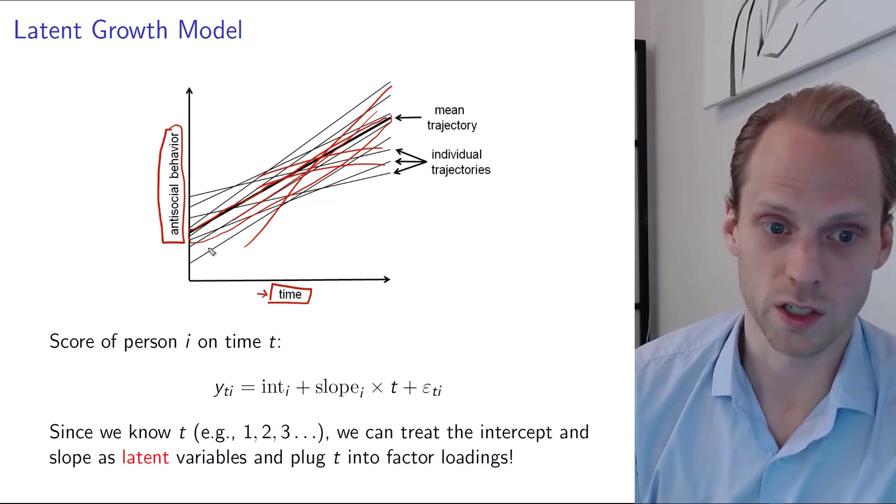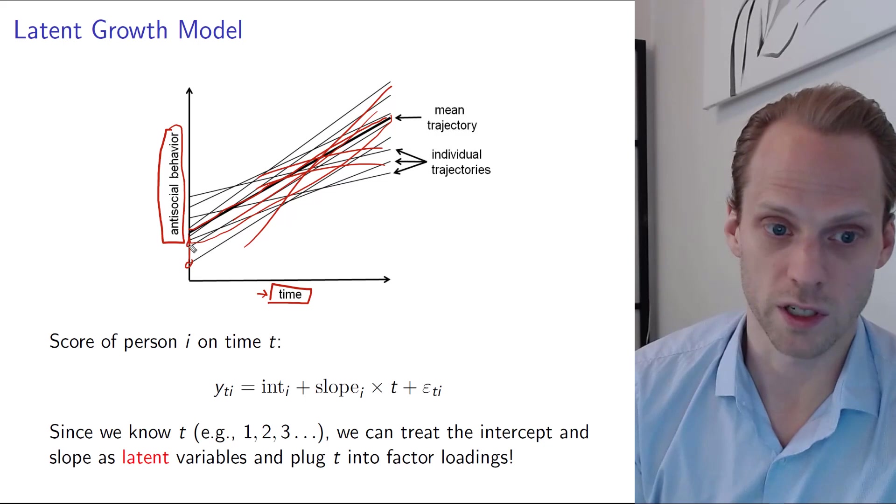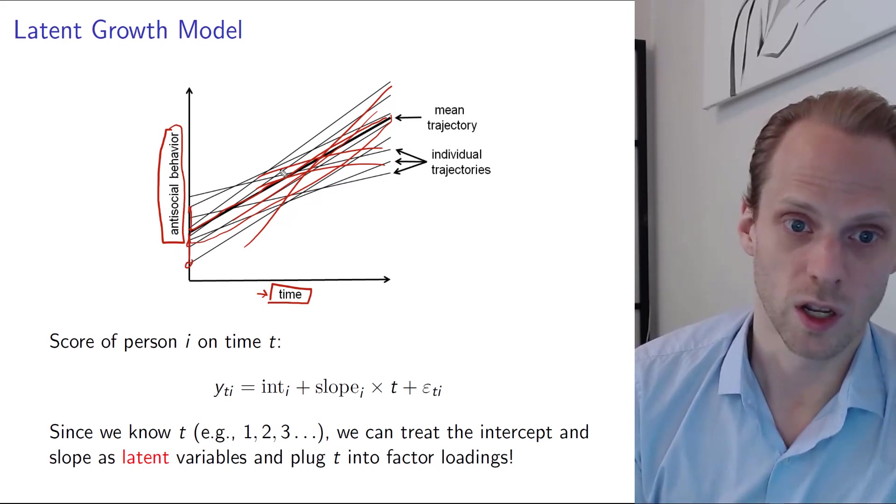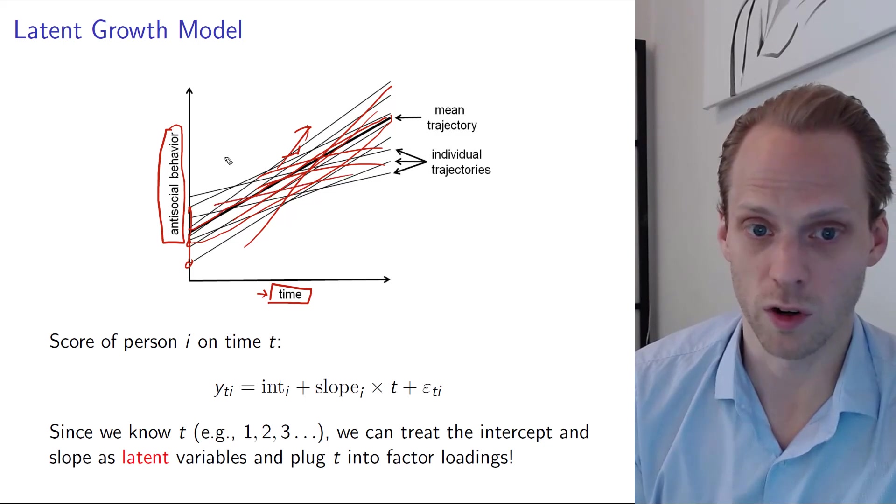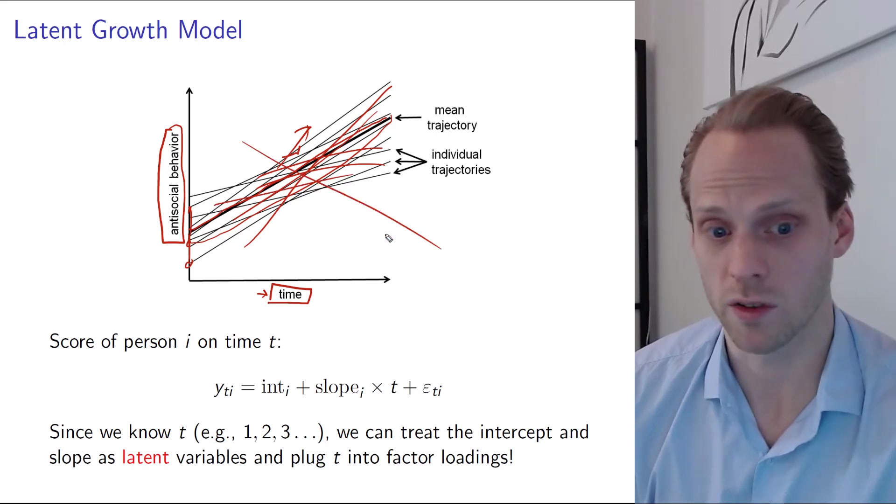But it could be that everybody around it has different effects. So some people grow faster, some people start lower. There are differences in where they start and differences in the slope. Some people grow faster, some people grow slower, maybe some people actually have a negative trend.